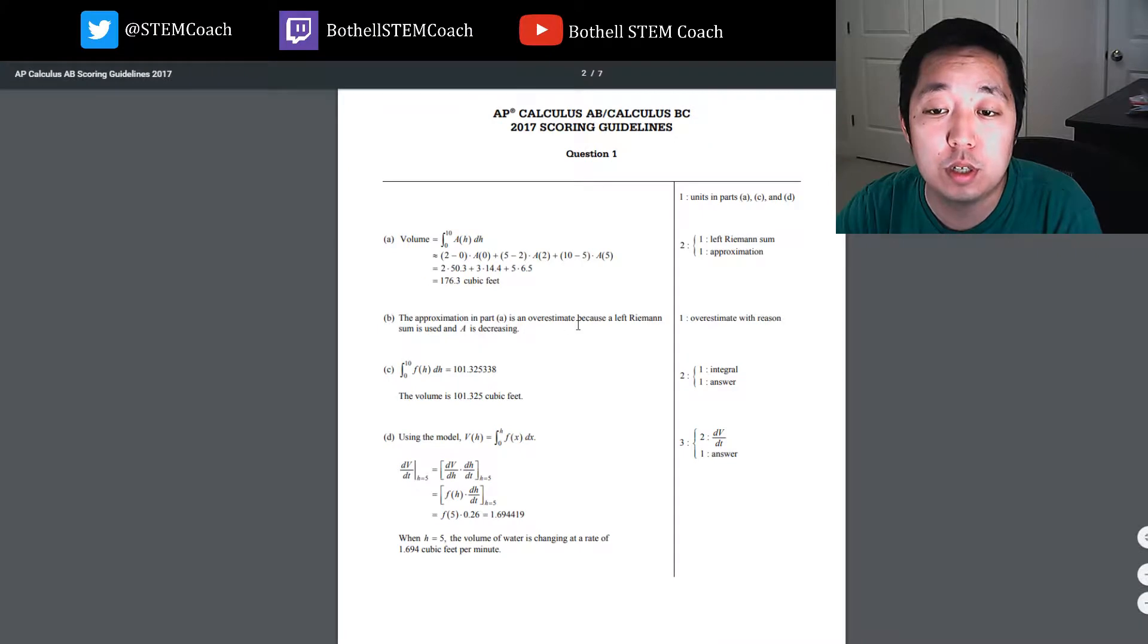Approximation is an overestimate because the left Riemann sum is used. Overestimate with reason. Well, I mean, yeah, it is the left Riemann sum. I didn't explicitly say it was a left Riemann sum. But that's fine.